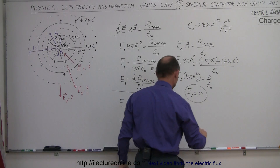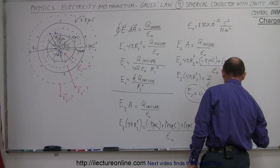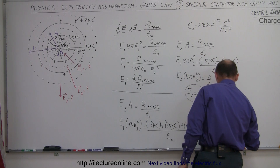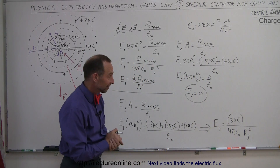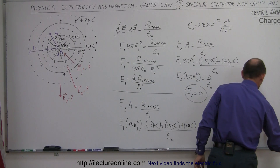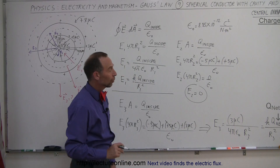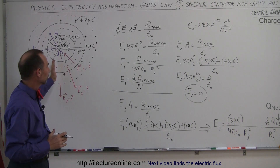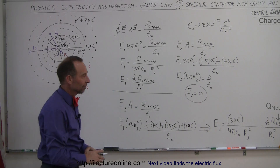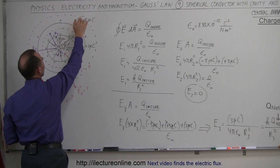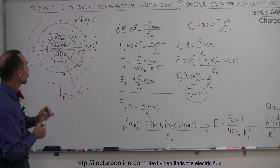So we can conclude that the electric field outside the conductor, E3, equals the net charge of 3 microcoulombs divided by 4π ε₀ R3² — which is simply K times Q net divided by R3 squared. This is the equation for the electric field outside a point charge. Q net is simply the total charge on all objects inside the surface: the minus 5 microcoulombs plus the 8 microcoulombs added to the conductor, giving a net charge of 3 microcoulombs. That's how we find the electric field in all three regions of a spherical conductor with a charge inside the cavity.